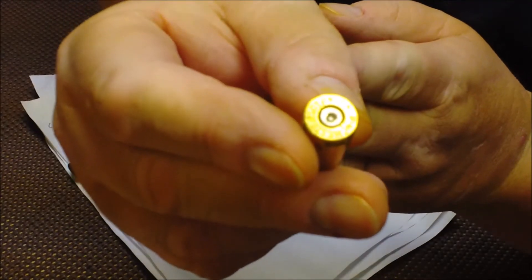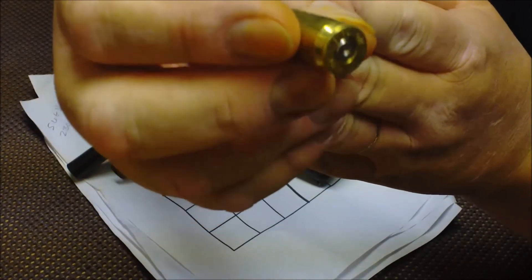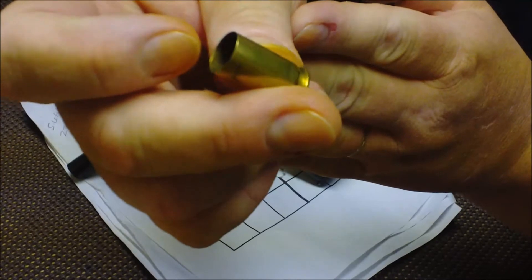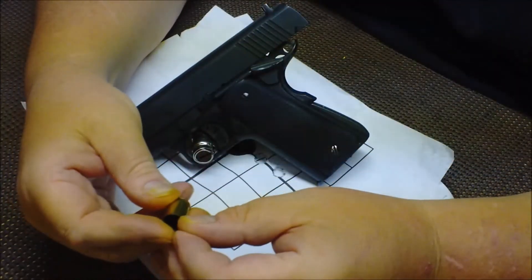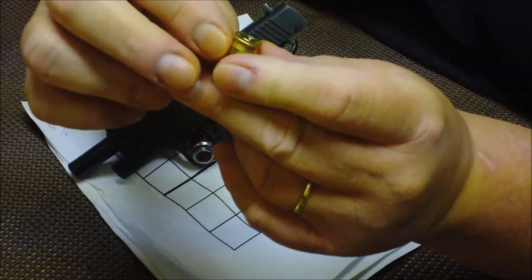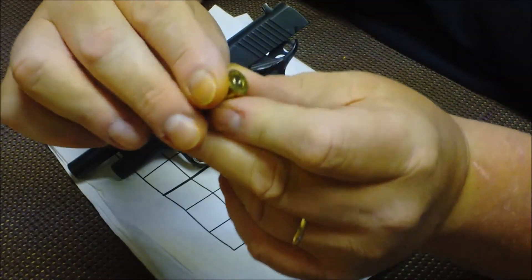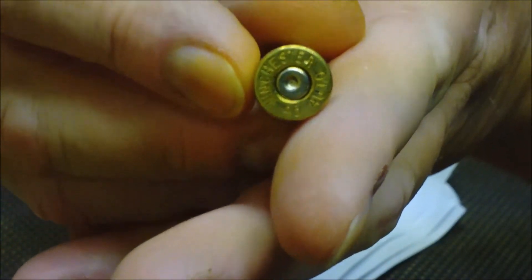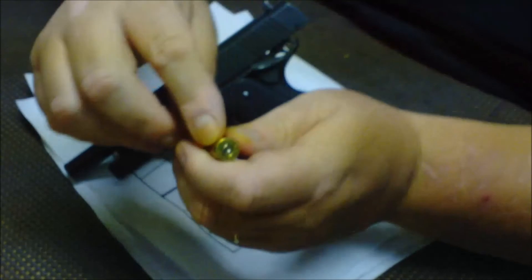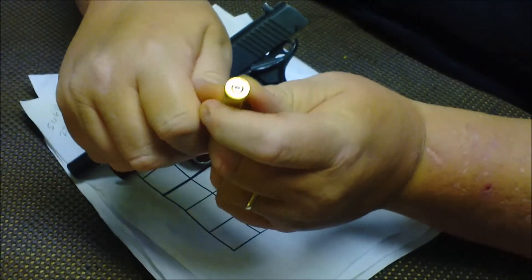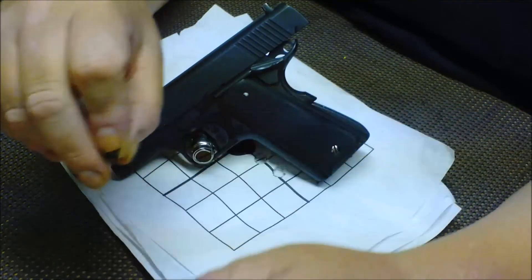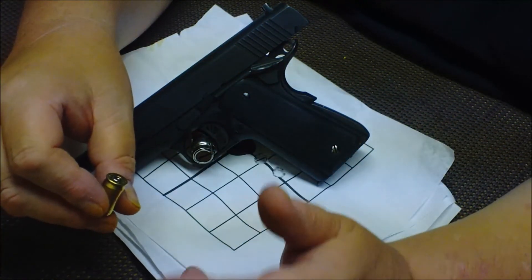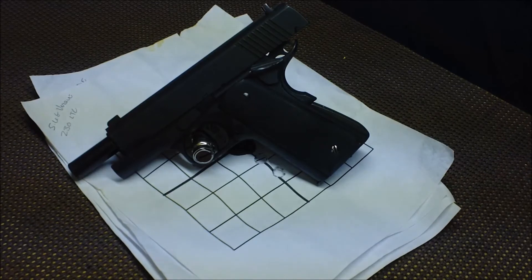We want to look at our primers and cases, make sure we're not splitting cases if we're overcharged. The primer - I don't know how well you can see this - this one is just beginning to flatten out. I'm sure this was the 5.6 grains. That's okay. If you're totally flattening that primer into the primer pocket, you need to back off your load. These aren't a bad load, they're working out pretty well.